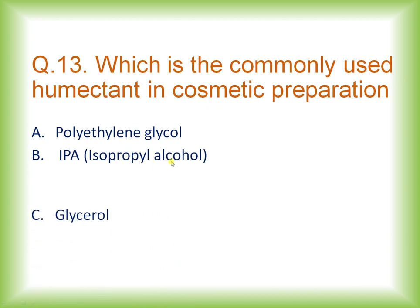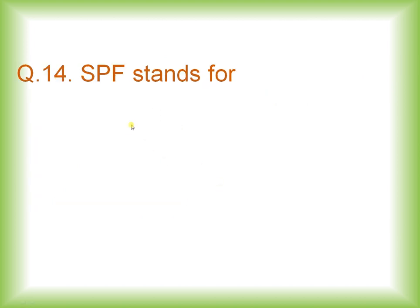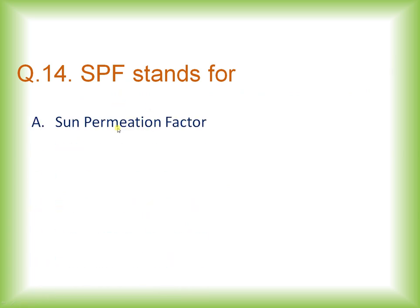Question thirteen: which is the commonly used humectant in cosmetic preparations? Options are polyethylene glycol, isopropyl alcohol (IPA), glycerol, or none of the above. The right answer is option C: glycerol is a commonly used humectant in cosmetic preparations.